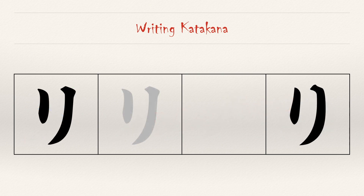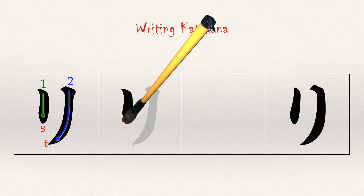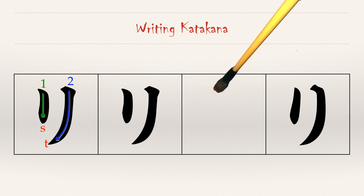Ri should look familiar, as it looks very much like its hiragana counterpart. The stroke order is also the same. The first stroke is on the left and it stops. And the final stroke of all the katakana characters is the stroke that goes down the right and curves slightly to the left as it comes to a tail. So let's try these two strokes together — stroke one and stroke two, the final stroke. And we have Ri.